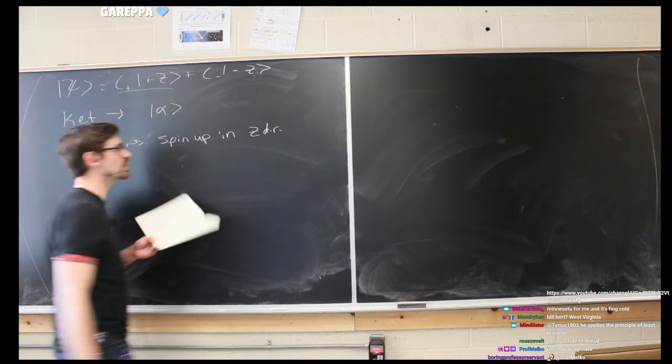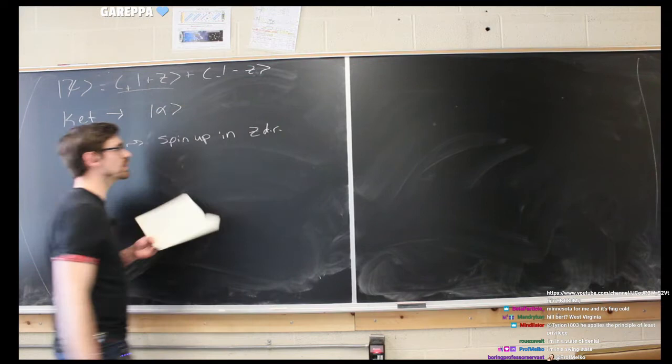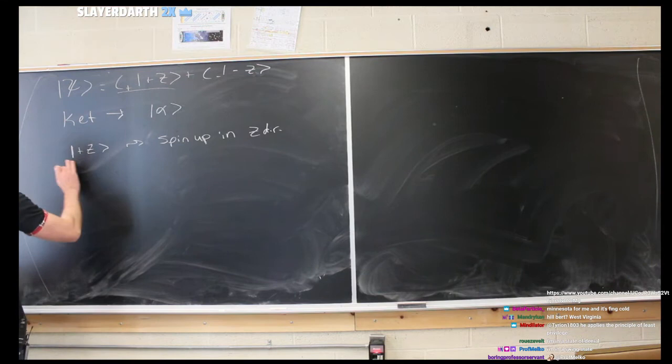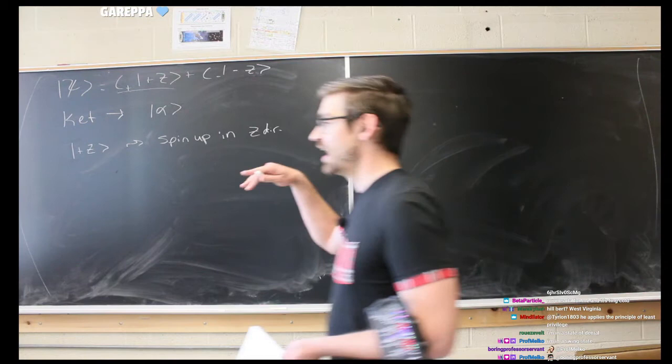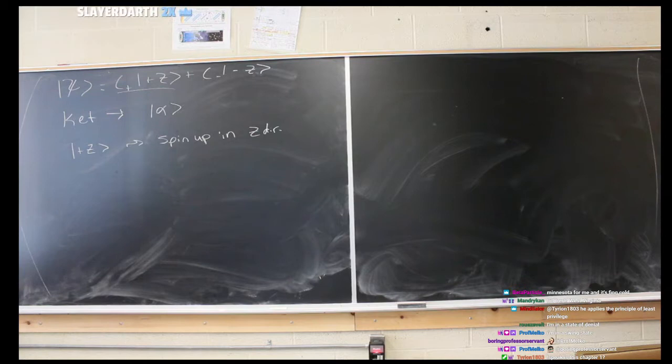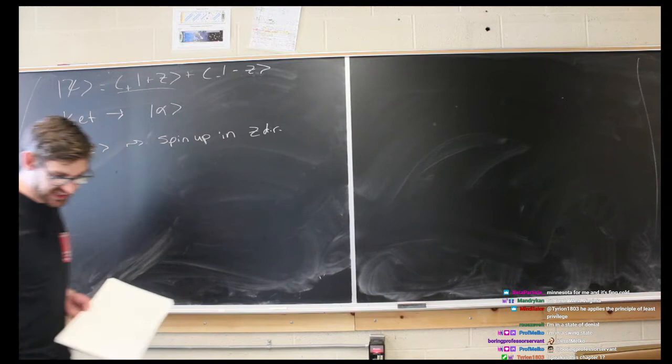We'll call this the z-basis — so we're going to say this is our primary basis. When we write the x and y states, we'll write them in the z-basis. So z is kind of the primary one. I'm loosely following Sakurai if you want to follow along — this is chapter one.